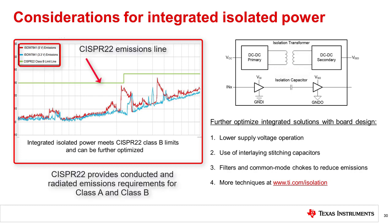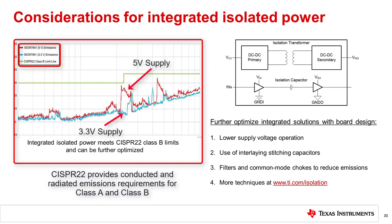CISPR22 is the European emission standard that differentiates between class A and class B equipment, and it gives figures for conducted and radiated emissions for each class. While the integrated device shown here meets the CISPR22 class B limit line regardless of supply, you can see in this example that emissions with a 3.3 volt input supply are significantly lower. Choosing an integrated solution like this does require additional focus on board and system level techniques to optimize for performance targets, including the use of interlayer stitching capacitance, filters, and common mode chokes to further reduce radiated emissions at the system level. You can learn more about low emission system design for integrated signal and power solutions at www.ti.com/isolation.